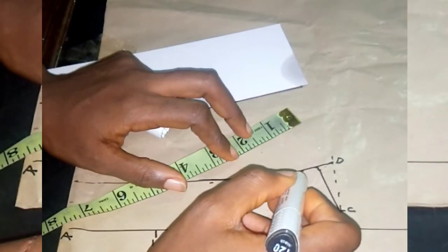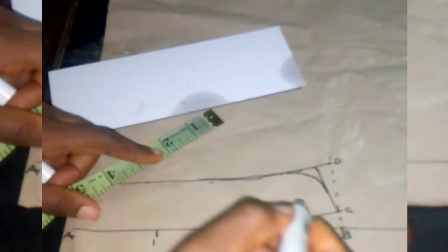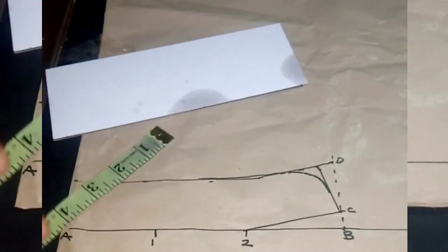After connecting to line C, then you create a curve. So I'm going to be drafting the collar pattern.